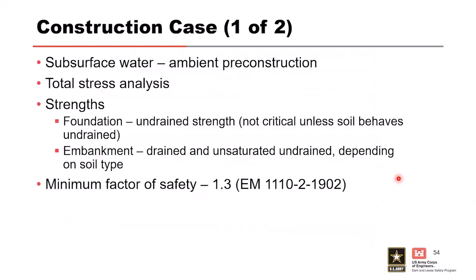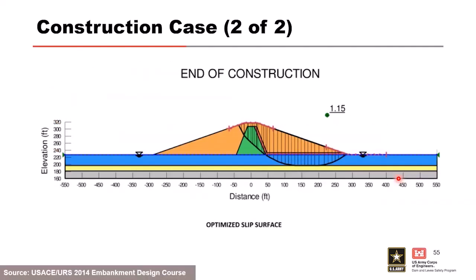For the construction case: subsurface water conditions are pre-construction foundation conditions. No pore pressures are assumed in the embankment, and undrained strength is assigned to the core and clay. The minimum factor of safety from EM 1902 for this case is 1.3. Results from the undrained strength analysis show a factor of safety that may not meet this minimum, which means you may need to flatten your slopes or otherwise increase stability.